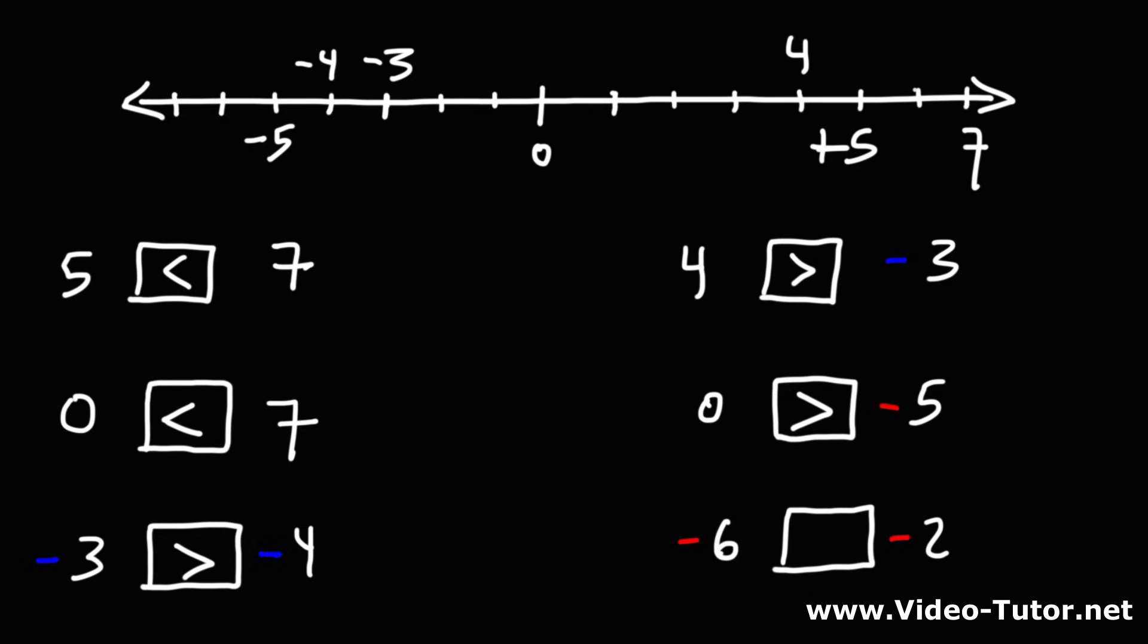What about negative 6 and negative 2? Negative 6 is to the left of negative 2. So negative 2 is greater. So we can write it like that. Negative 6 is less than negative 2, or negative 2 is greater than negative 6.